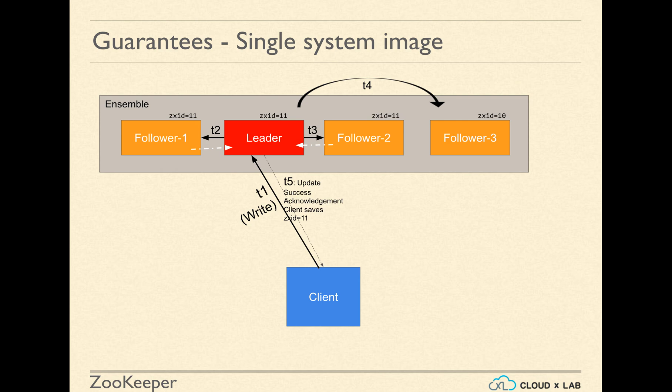Afterwards, when it is confirmed that the majority of the nodes have saved the data, the confirmation goes to the client. Since there are total of 4 nodes, for majority we need 3 nodes. Had there been 3 nodes, the majority would be 2. Here Follower 1, Follower 2 and Leader have saved the data. Therefore it would give the confirmation to the client that the write request was successful.